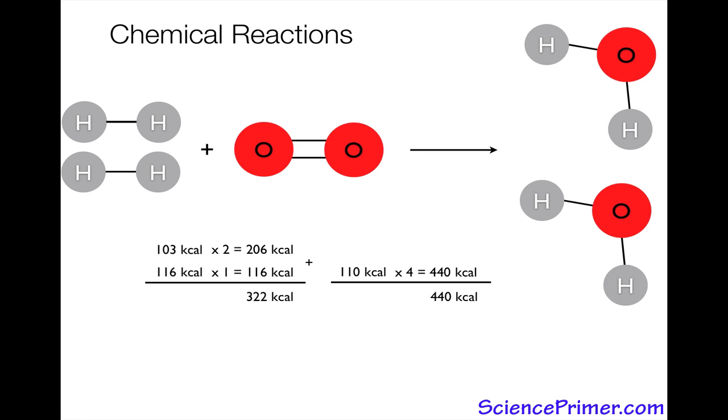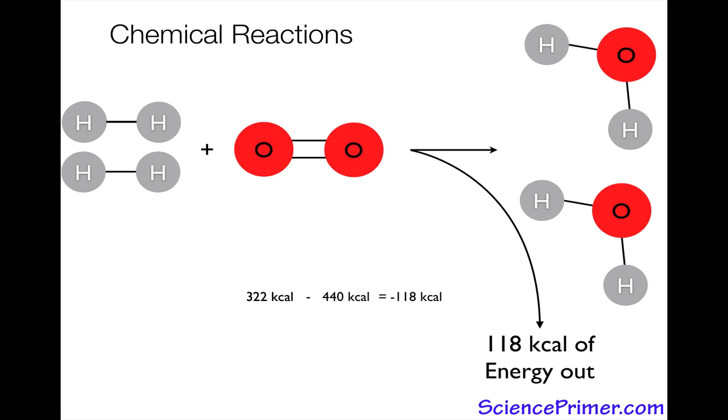So now we have the energy required to start the reaction and the energy released when the reaction is finished. And to figure out the energetics, we just take the difference of the energy in minus the energy out. In this case, we get 118 kilocalories. And what this means is that when two moles of water are formed from two moles of hydrogen and one mole of oxygen gas, 118 kilocalories of energy is released.